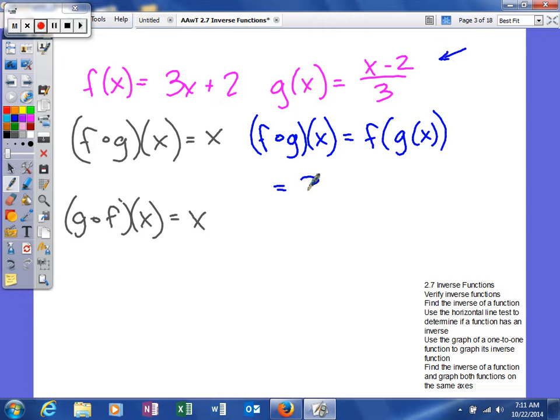Our f function tells us to multiply by three and then add two. So when we plug in x minus two divided by three, we do those two things. When you multiply three by g of x, the threes cancel, leaving us x minus two plus two, which equals x.